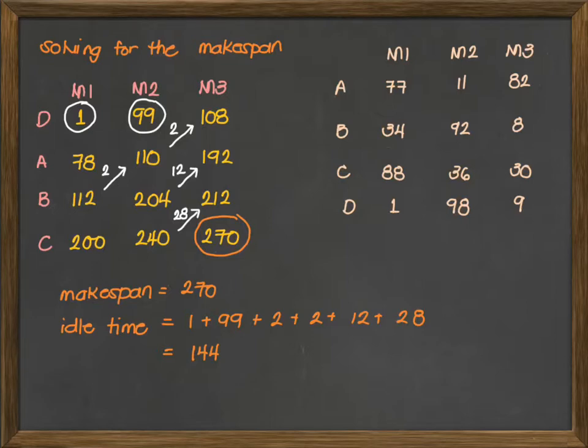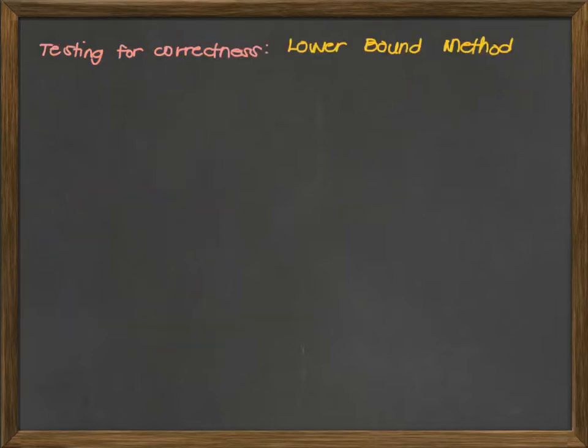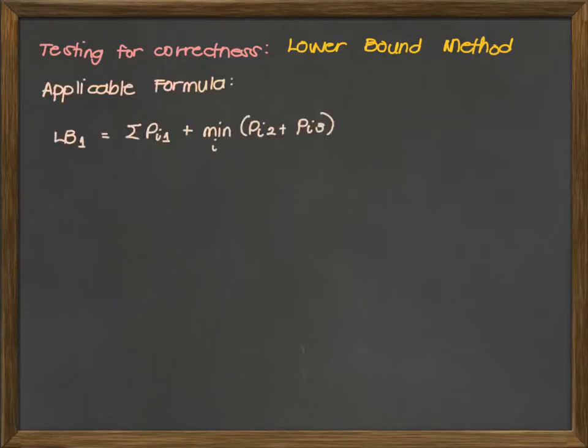The next step, once we have completed the makespan and the idle time, is to check how far is our heuristic value from the optimal value. We use the lower bound method. We have the following applicable formula for the three machines. For the first lower bound for the first machine, the formula here is the sum of all the process time in machine 1 plus the minimum sum between the processing time of machine 2 and machine 3.